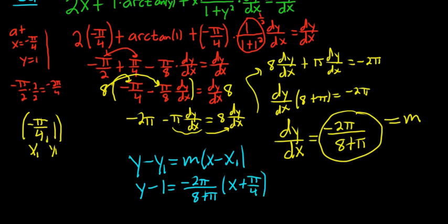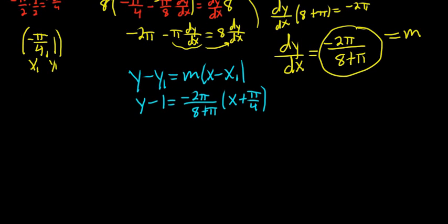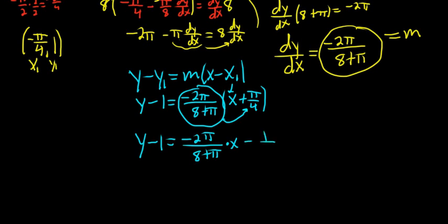And now let's solve for y. So we have y minus 1 equals, let's distribute this carefully. This times x is just negative 2 pi over 8 plus pi times x. Now I have to be really careful here in this next step, multiplying this times this. The 2 and the 4, that's going to give us negative 1 half out front, and then pi times pi is pi squared. Be really careful there. I feel like I've messed up here before.